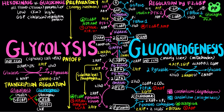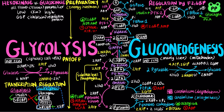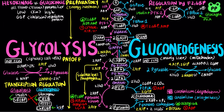Carbohydrate response element binding protein, or ChREBP, is stimulated by xylulose-5-phosphate, an intermediate of the pentose phosphate pathway, which increases with glucose concentration. ChREBP also promotes gluconeogenesis.